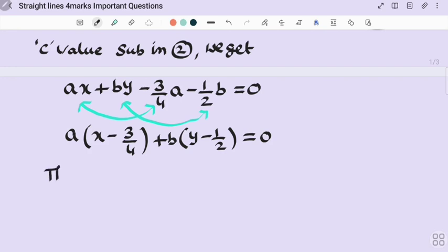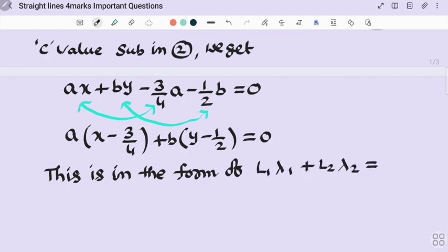This is in the form of L₁λ₁ + L₂λ₂ = 0. That means λ₁ means a, λ₂ means b, L₁ means x - 3/4, L₂ means y - 1/2. Whenever it is representing like this, it shows that it represents family of concurrent lines.